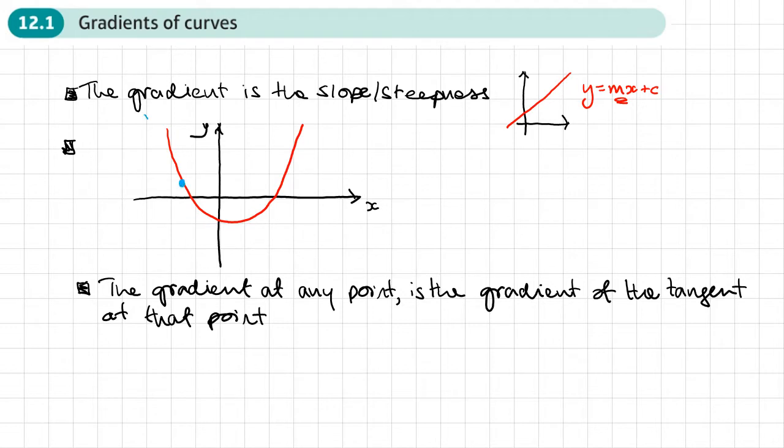If I move that to somewhere else and I wanted to find the gradient here at this point, I would draw a tangent, a line that's just touching the curve at that point, and that will give me the gradient at that point.